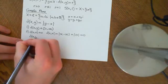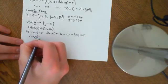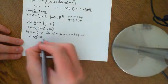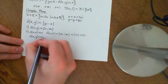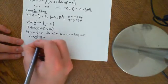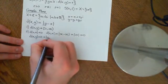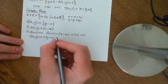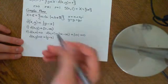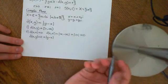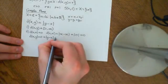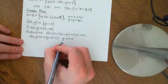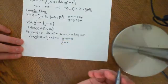Conversely, we want to make sure that if the distance between two complex numbers X and Y is equal to zero, this implies X equals Y. By definition, the distance being zero means the modulus of Y minus X equals zero. The only complex number with modulus zero is zero itself, so Y minus X equals zero, implying Y equals X.